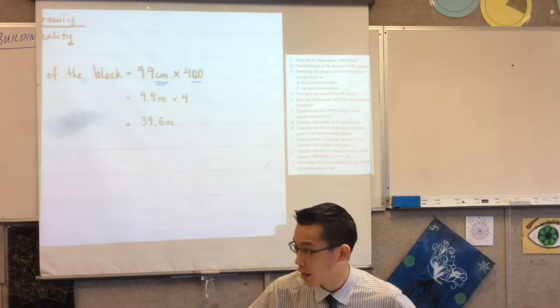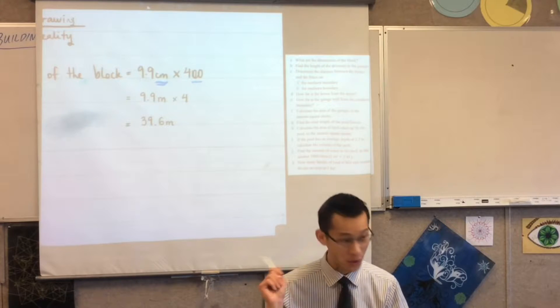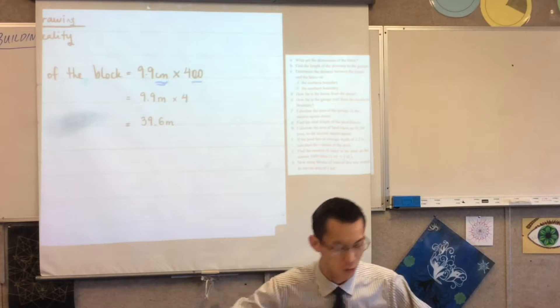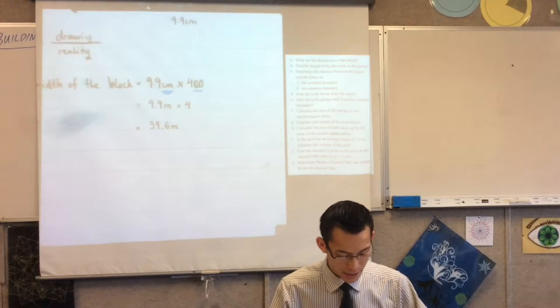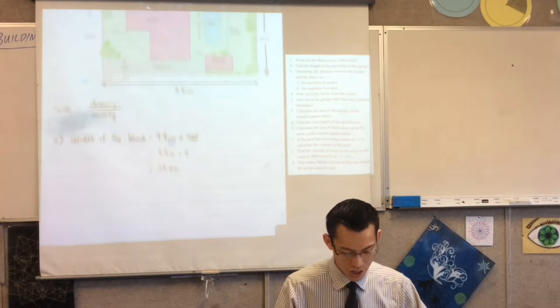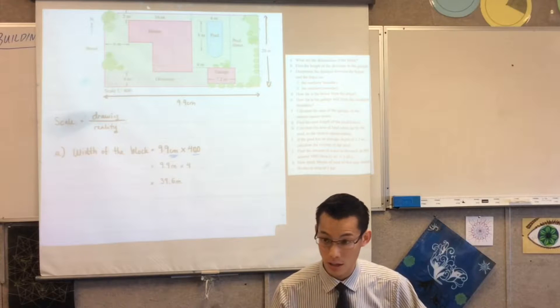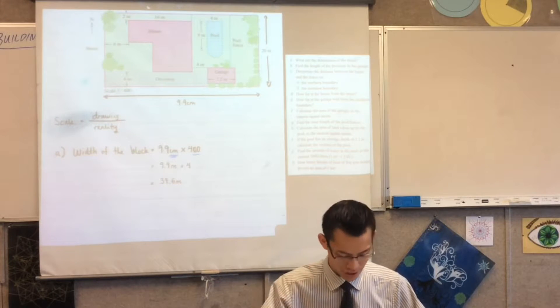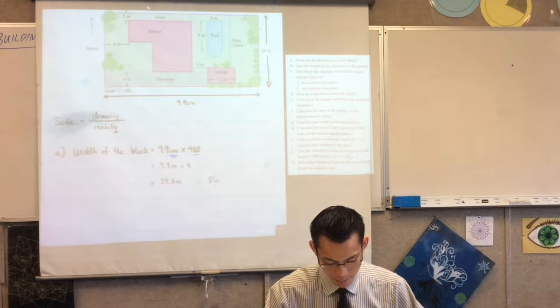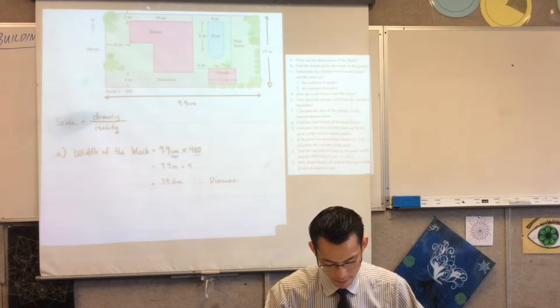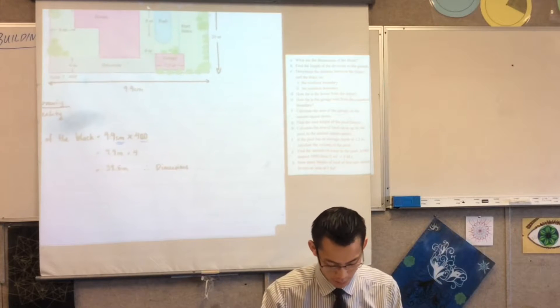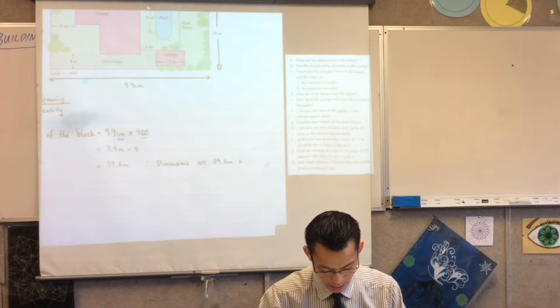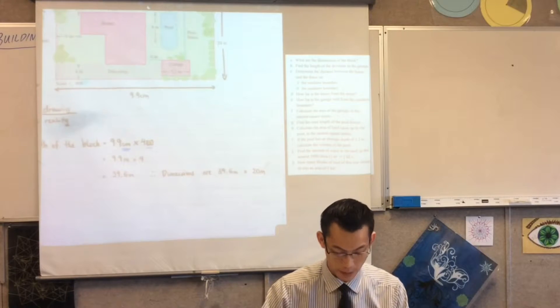Okay one of the ways I check that quickly is it's close to 10, so if it's pretty much 10, 10 times 4 is 40 but you take off a little bit. So I've used my ruler to measure and find out the width of the block, have I answered the question? Not quite. I need the dimensions right, so I would say therefore the dimensions are 39.6 meters by 20 meters.